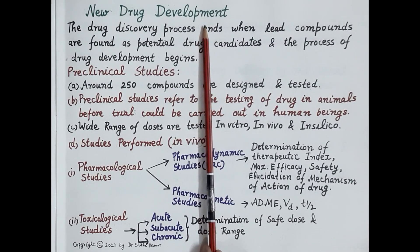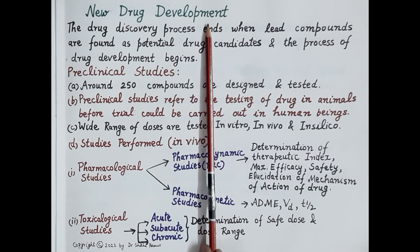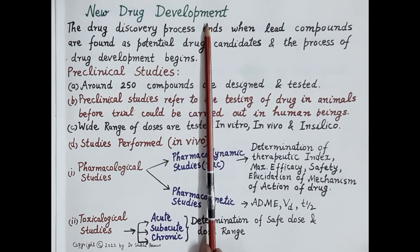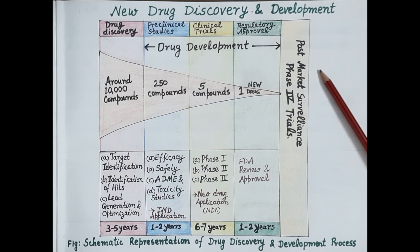Hello students, in this video we are going to discuss the topic of new drug development. This video is third in the series of videos on new drug discovery and development. Introducing a new drug in the market is a highly complex process and it costs a pharmaceutical company around 1.5 billion US dollars and 10 to 15 years of research and development.